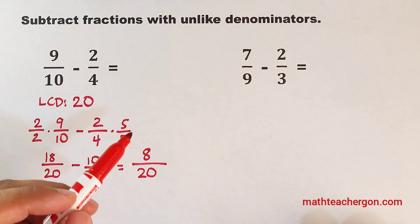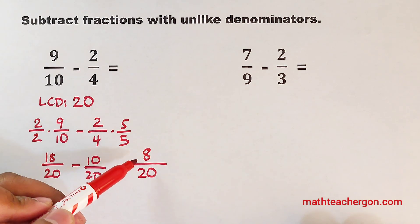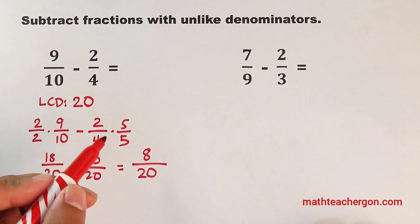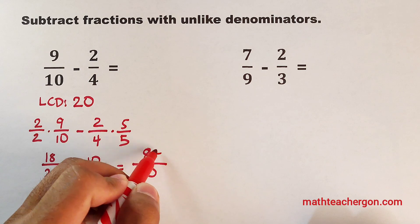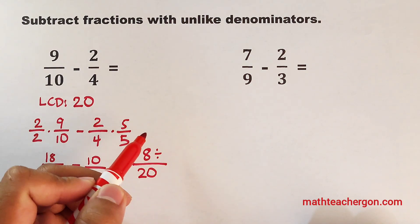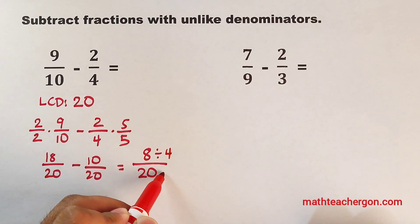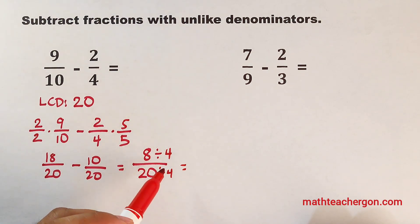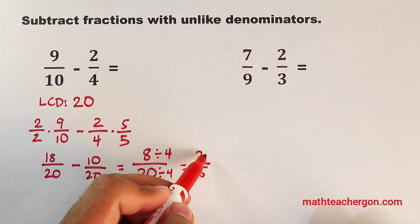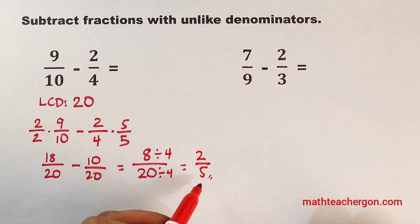For the last step, we need to inspect or check if this answer can be simplified. Since 8 and 20 can be simplified, we need to divide this by how many? By 4. And this is also by 4. In this case, 8 divided by 4 is equal to 2. And then 20 divided by 4, that is equal to 5. And as you can see, we can declare this one as the final answer.